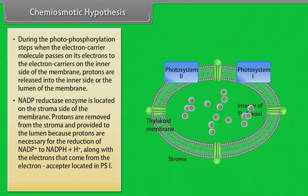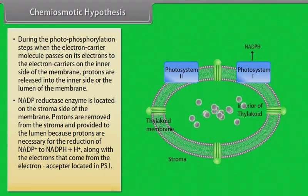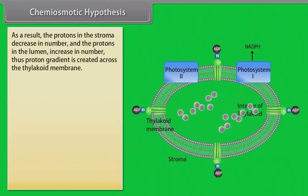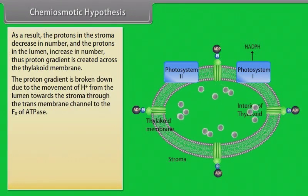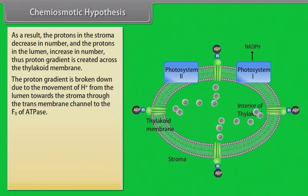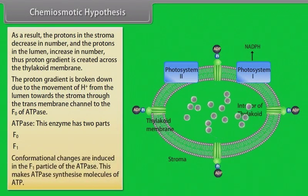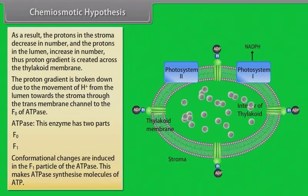Protons are necessary for the reduction of NADP+ to NADPH+H+, along with electrons from the electron acceptor in PS1. As a result, protons in the stroma decrease and protons in the lumen increase, creating a proton gradient across the thylakoid membrane. This gradient is broken down by the movement of H+ from the lumen to the stroma through the transmembrane channel of F0 of ATPase. ATPase has two parts: F0 and F1. Conformational changes are induced in the F1 particle of ATPase, causing it to synthesize molecules of ATP.